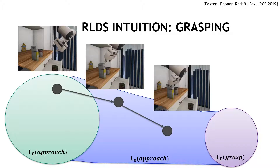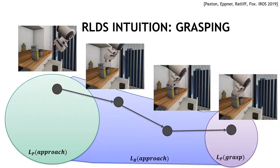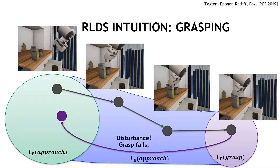So long as the run conditions remain true, we continue to approach, until finally we enter the higher priority state of actually grasping the object and closing the gripper. But if something went wrong, we would find ourselves back in the larger set of preconditions associated with a successful approach, and then be able to continue execution once again.